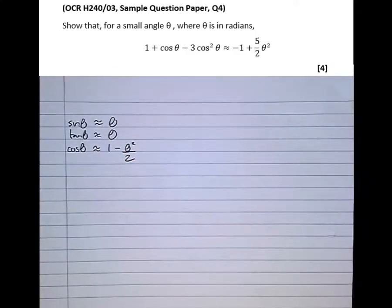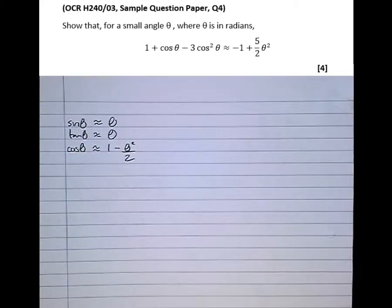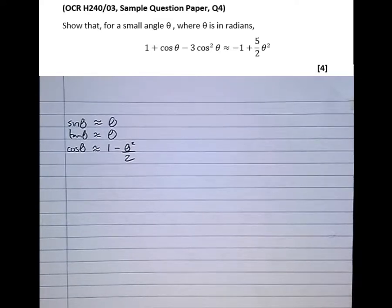So whenever we're dealing with small angles, if we see sine theta anywhere, we can replace it with theta. Whenever we see tan theta, we can replace it with theta. And whenever we see cos theta, we can replace it with 1 minus theta squared over 2. So let's have a go at this question now.